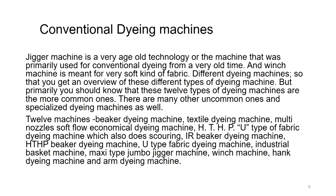The fabric is wound and immersed in the dye solution. Jigger machine is a very old technology primarily used for conventional dyeing, and winch machine is meant for very soft kinds of fabric. There are twelve types of common machines, but there are also many uncommon and specialized dyeing machines, because according to the requirement of the dyer, even dye machine manufacturing units can tailor-make machines accordingly.